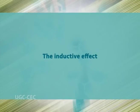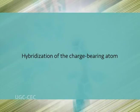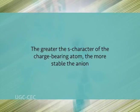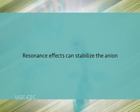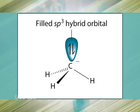The stability and reactivity of a carbanion is determined by several factors: the inductive effect — electronegative atoms adjacent to the charge will stabilize it; the hybridization of the charge-bearing atom — the greater the s character, the more stable the anion; and the extent of conjugation — resonance effects can stabilize the anion, especially when stabilized by aromaticity. Carbanions are trivalent with sp³ hybridization, and the lone pair of electrons occupies one of the sp³ orbitals.